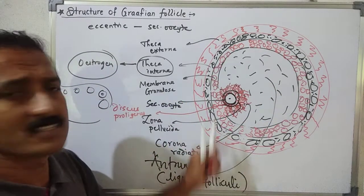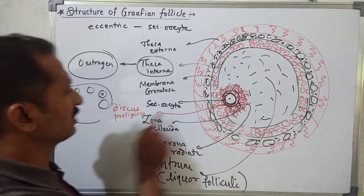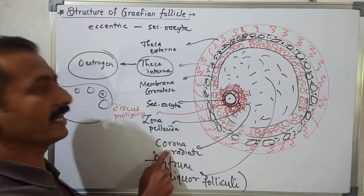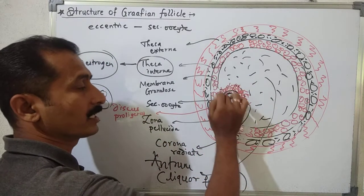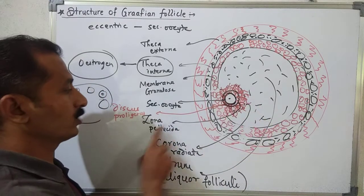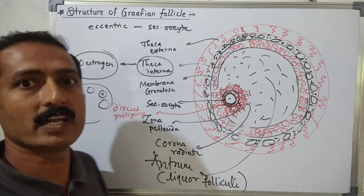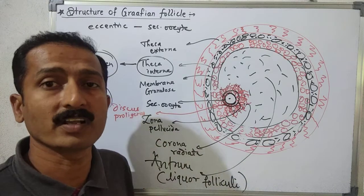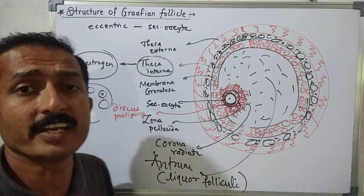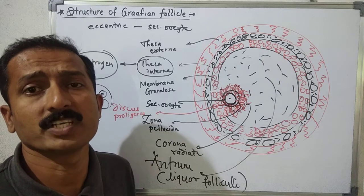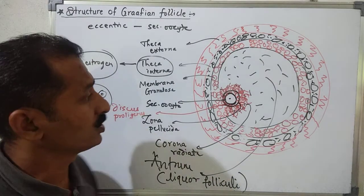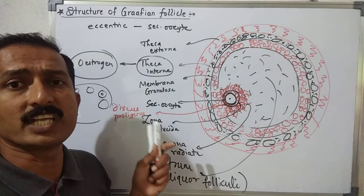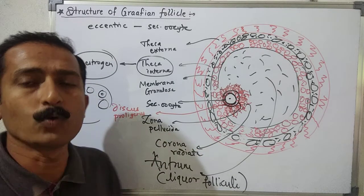Some follicular cells of the membrana granulosa divide — some form the inner part called discus proligerus, and some form the outer part called corona radiata. The layer around the secondary oocyte facing outside is zona pellucida. The internal cavity is the antrum. Estrogen is secreted by the theca interna of the mature Graafian follicle.